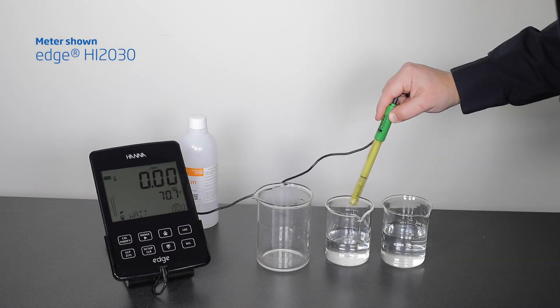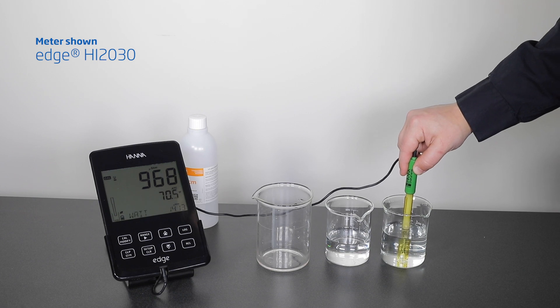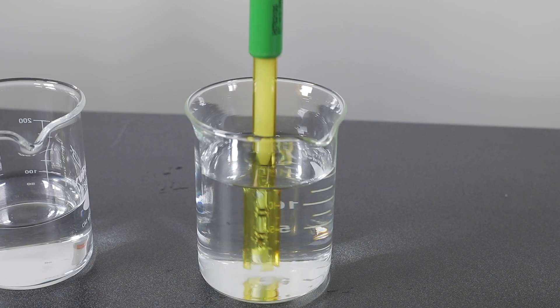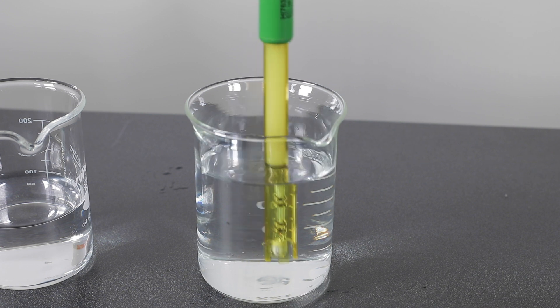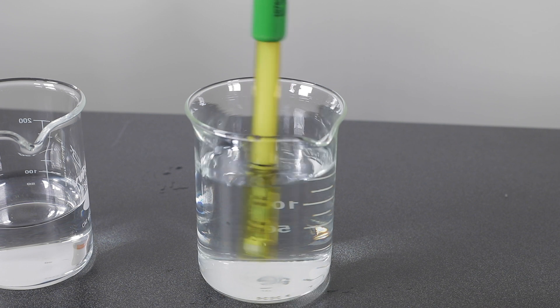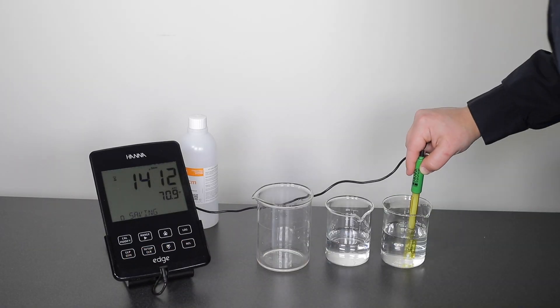Next, you can calibrate the probe in your standard. Immerse the probe in your standard and gently tap the probe on the bottom of the beaker. This removes any trapped air bubbles. Gently stir the solution. You don't want to introduce extra air bubbles into the standard. Wait for the probe to stabilize and continue on to measurement.